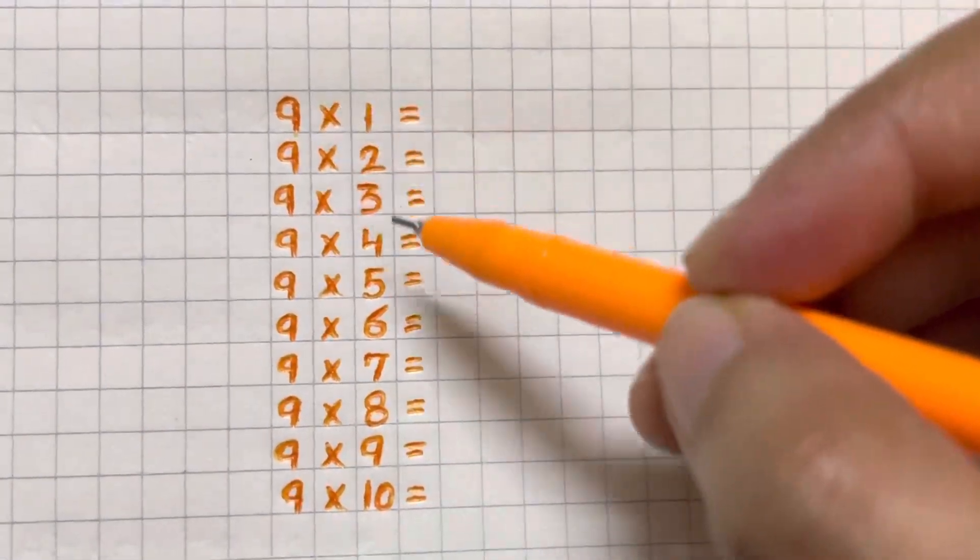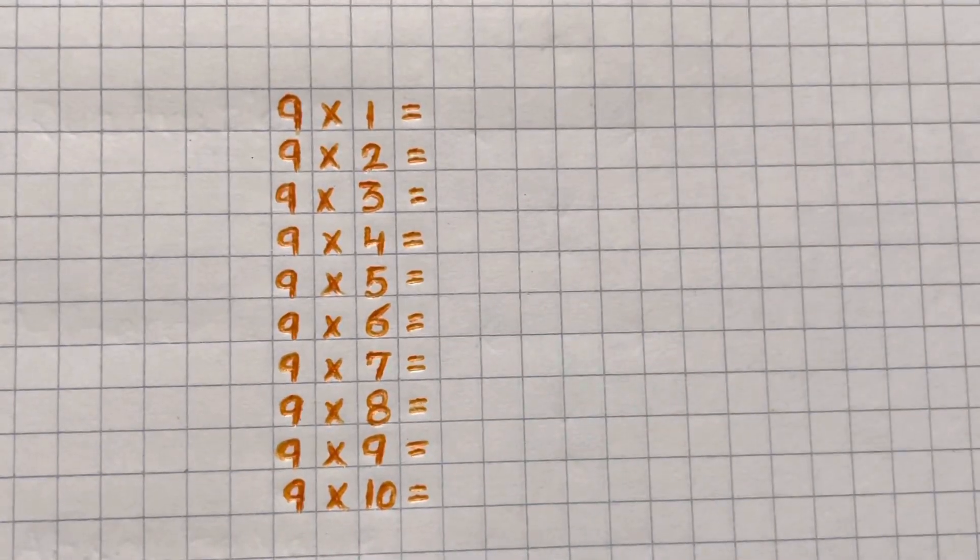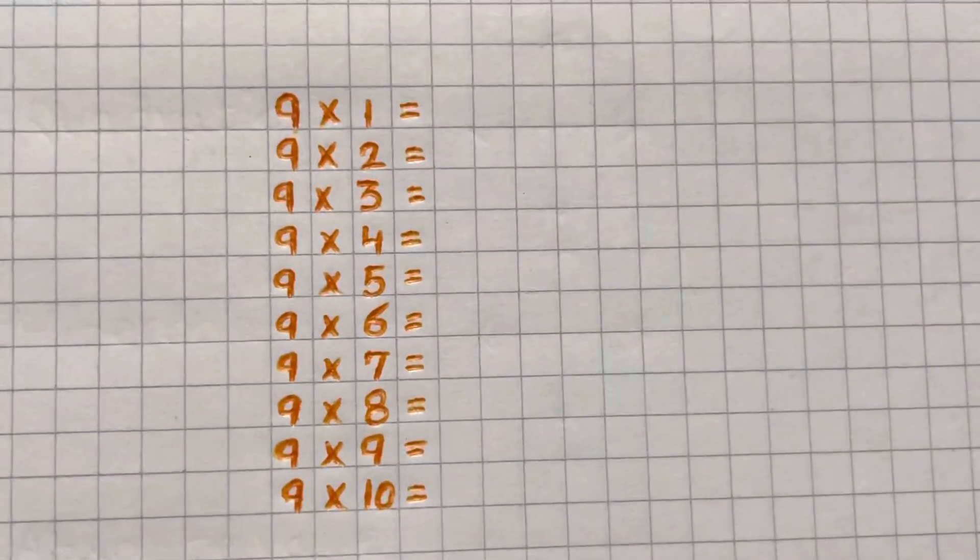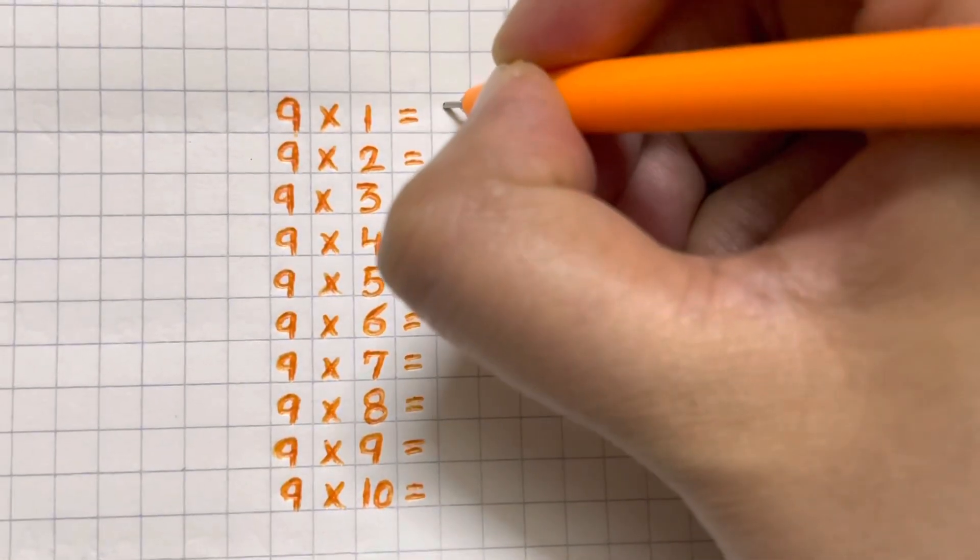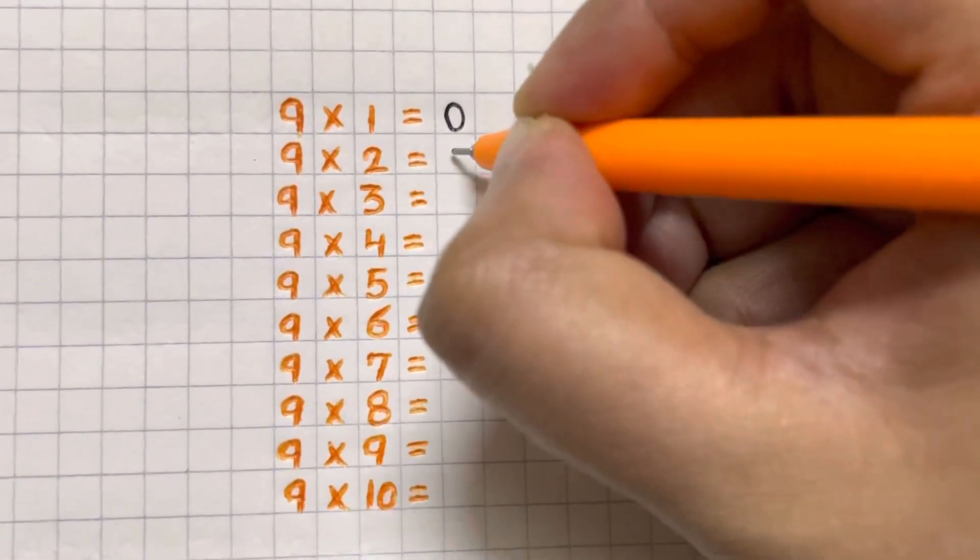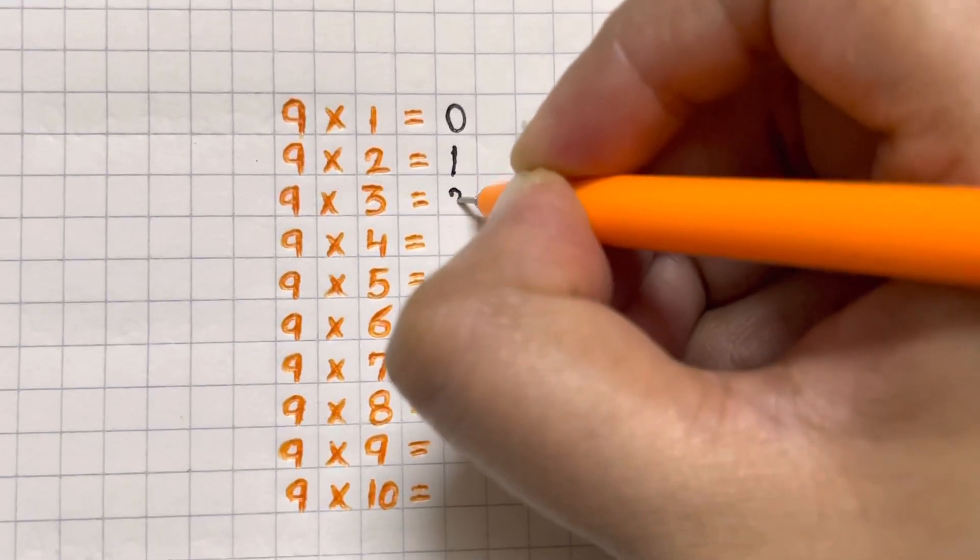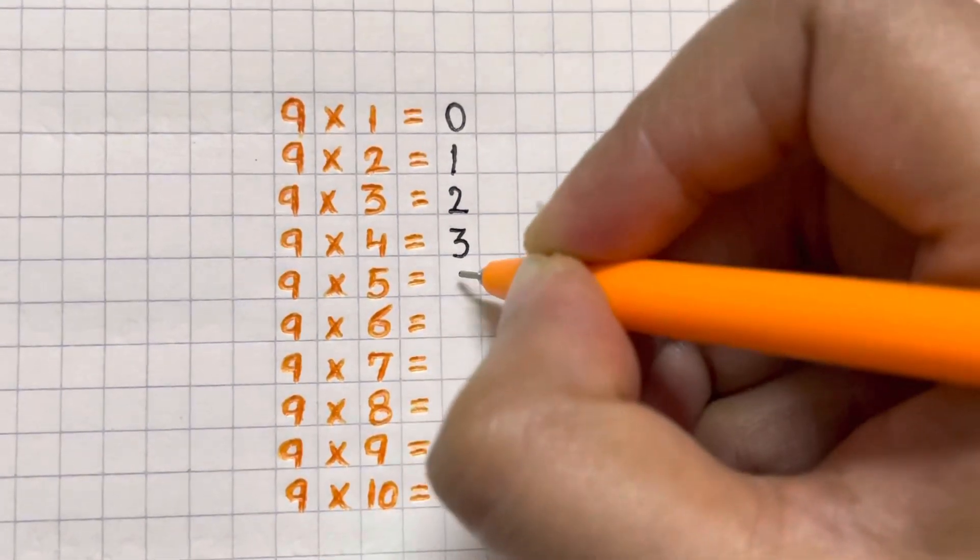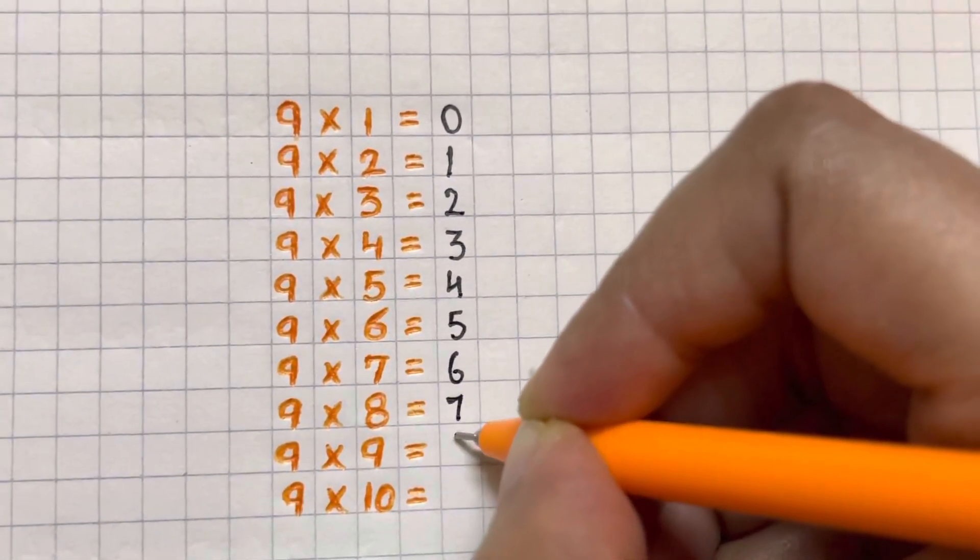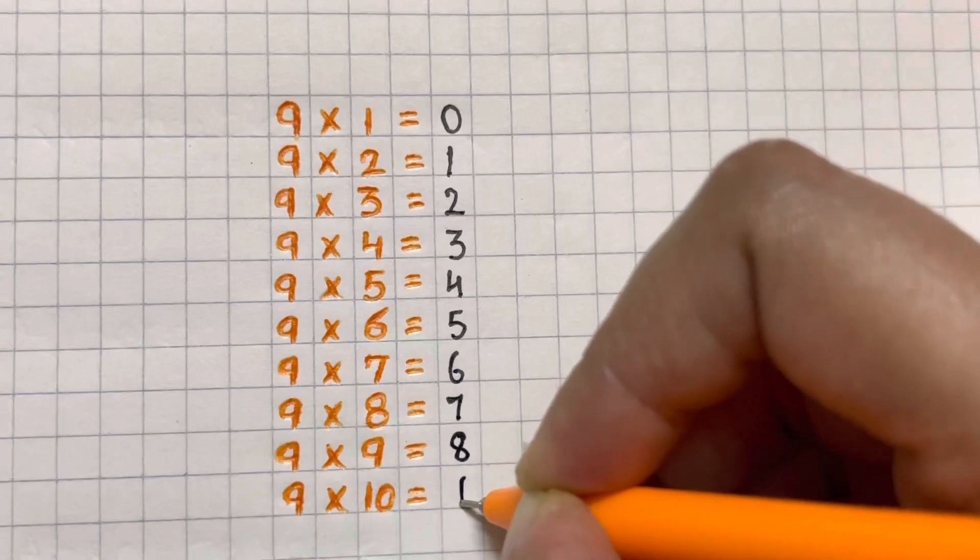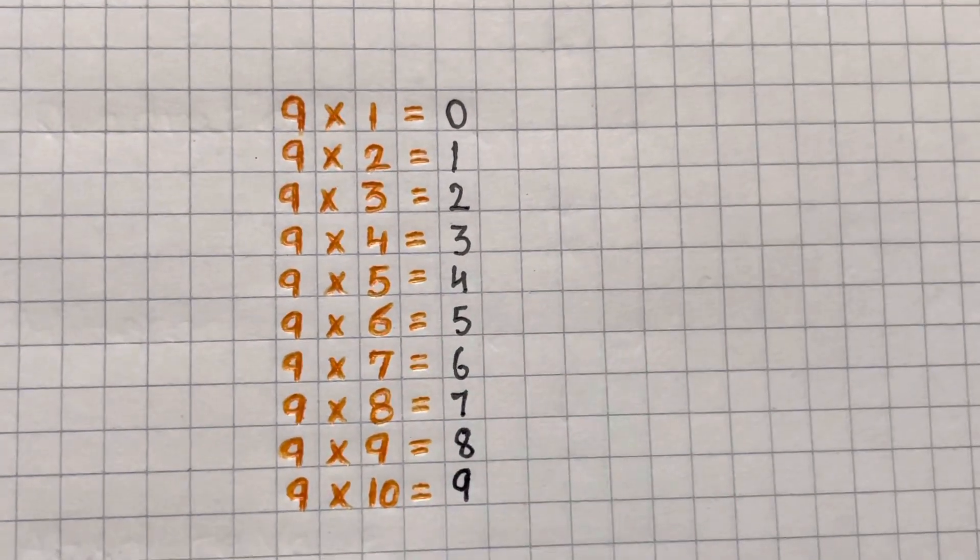And now I'm going to show you the nine times table unique trick. So all you have to do is just start writing the numbers from zero, zero, one, two, three, four, five, six, seven, eight, and nine.